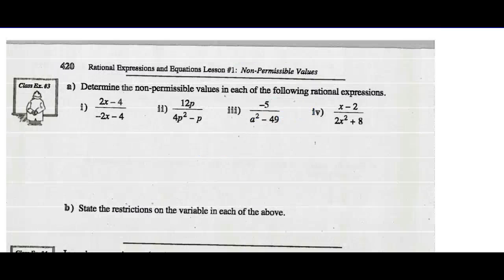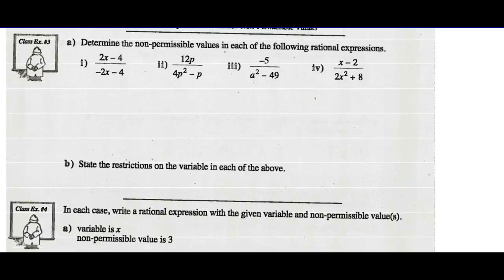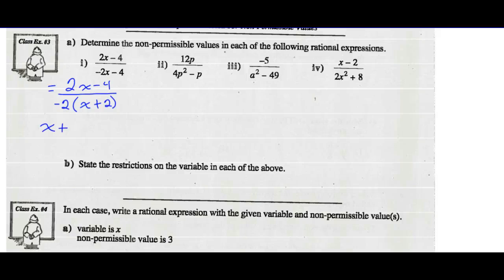Example 3: determine the non-permissible values in each of the following rational expressions. Step 1 is to factor the denominator. For the first expression, I factor out a negative 2 from the denominator and get x plus 2. If finding non-permissible values, I don't worry about non-variable factors in my denominator — so I ignore the negative 2 and look at x plus 2, which can't equal 0. That occurs when x equals negative 2. So negative 2 is the non-permissible value for the first expression.